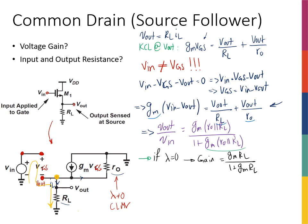For input and output resistance: the input resistance is infinity since VIN is connected to the gate. RIN is infinity. For Rout, looking from the output, I see RL to ground looking down, and looking into the source of the transistor I see 1/GM. So Rout equals (1/GM) in parallel with RL.